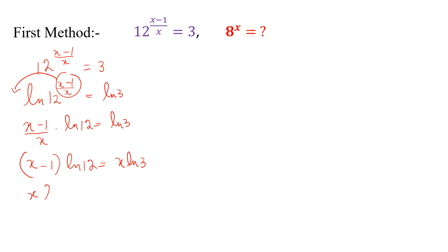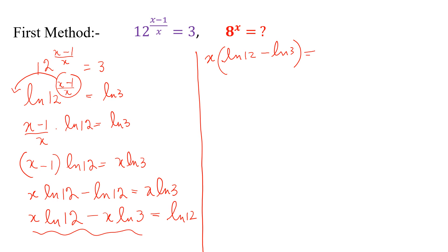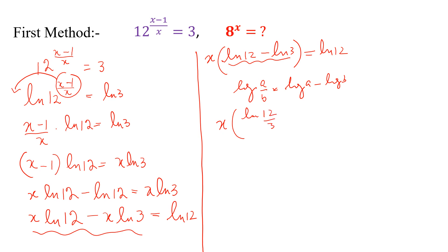Simplifying, we write x natural log of 12 minus natural log of 12 is equal to x natural log of 3. Rearranging, x natural log of 12 minus x natural log of 3 is equal to natural log of 12. Taking x common: x into natural log of 12 minus natural log of 3 is equal to natural log of 12. By the log property log(a/b) = log a minus log b, we can write x is equal to natural log of 12.